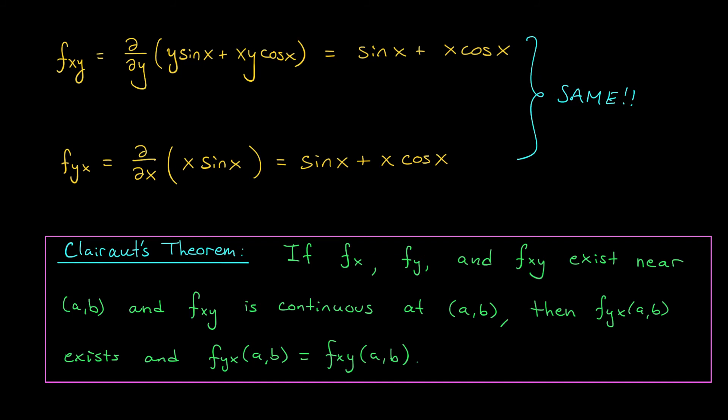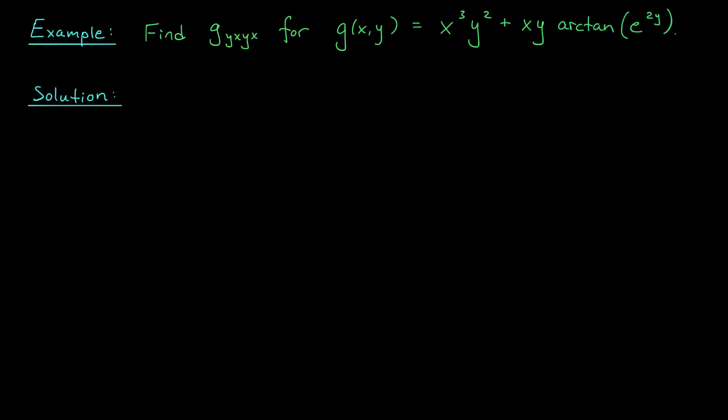Okay, folks, for our last example, I have just another typical derivative question. Here, we're looking for, okay, it's some kind of a fourth derivative, gyxyx. So first with respect to y, then x, then y, then x. For the function, g(x,y) equals, oh, look at this thing. Oh, it's horrible. We have a first term, which isn't too bad. But in the second term, xy arctan e to the 2y. Oh my goodness, that looks just awful. And we have to do four derivatives of this thing. Oh, give me a break. I mean, come on. Even for the first derivative with respect to y, it looks like I'm going to have some really gross product rule here. And then later on, I have to do the derivative with respect to y again. That's going to be another product rule, probably. Oh my goodness. I don't want to do this at all. Well, fortunately, we don't have to do it in this way.